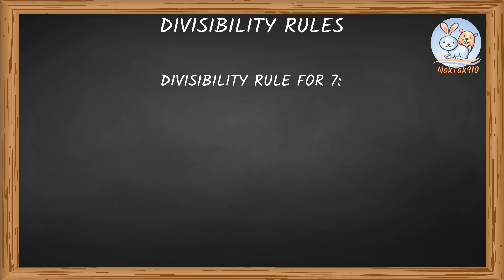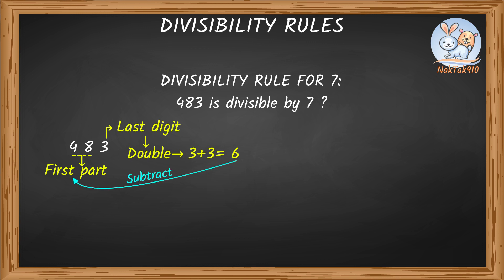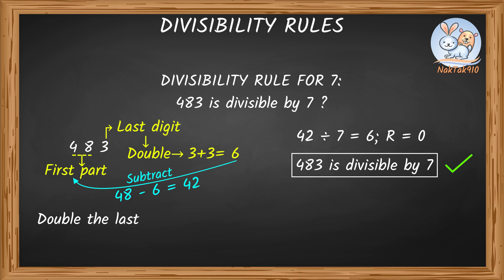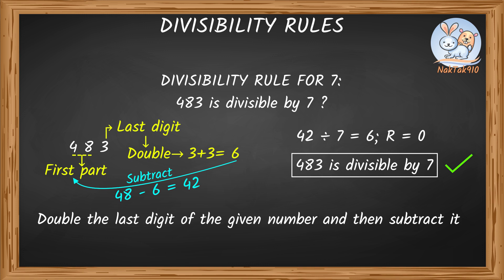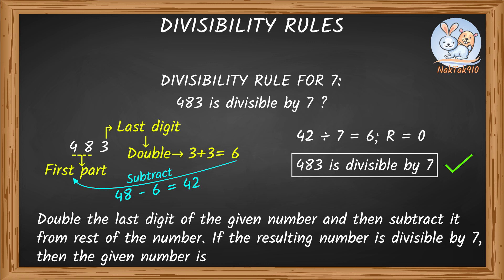Divisibility rule for 7 — this is a little tricky. Say we're testing if 483 is divisible by 7. The last digit is 3. Double that number: 3 plus 3 is 6. The first part of the number is 48. Subtract 6 from 48: 48 minus 6 equals 42. And 42 divided by 7 equals 6, so 483 is divisible by 7. The rule: double the last digit and subtract it from the rest of the number. If the result is divisible by 7, then the given number is divisible by 7.